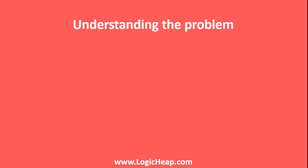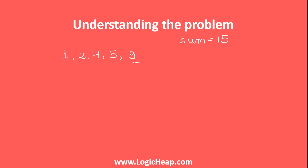Let's understand this problem. Suppose you have the set of integers 1, 2, 4, 5, and 9, and sum is equal to 15. Now I have to see if there is any subset whose sum gives me 15. By inspection, I can see that if I take 9, 4, and 2 — so 2 plus 4 plus 9 is equal to 15. So yes, I have a subset whose sum is equal to 15.